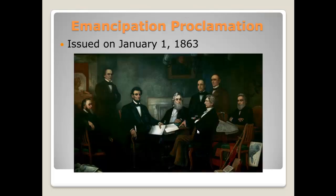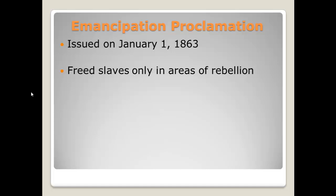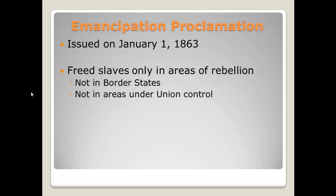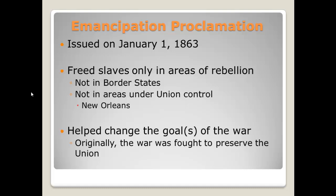The Emancipation Proclamation was issued on January 1st, 1863 — a little less than two years into Lincoln's presidency. Members of his cabinet are depicted in a famous painting, including Salmon P. Chase, his Secretary of Treasury, and William Seward, one of the greatest Secretaries of State ever. This freed slaves only in areas of rebellion — it did not free slaves everywhere, especially not in the border states. It only freed slaves in the Confederate States of America, which Lincoln technically did not have power over, and not in areas under Union control. For example, in New Orleans, which was under Union control, slaves were not freed. This helped change the goals of the war — from preserving the Union toward abolishing slavery.